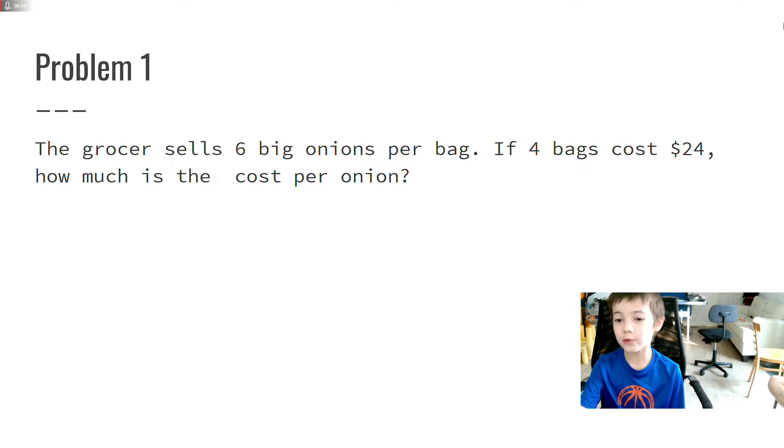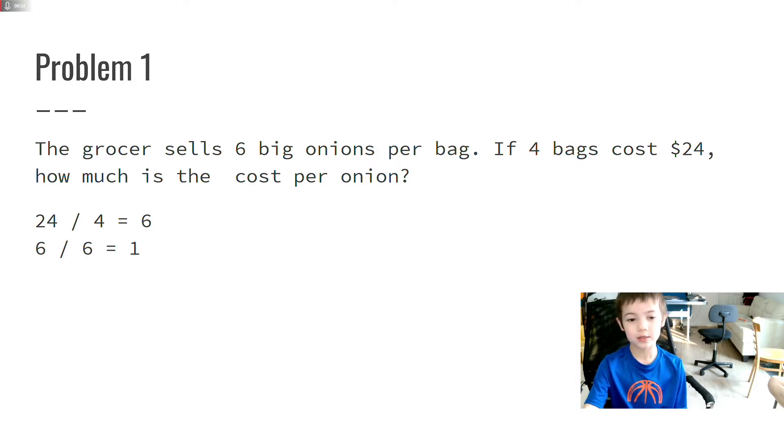If you do 24 divided by 4, that will give you the cost per bag, which equals 6. And then you want to do 6 divided by 6 because there's 6 onions and each bag costs $6. That means you do 6 divided by 6 to find the cost per onion, and that equals $1.